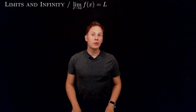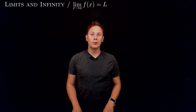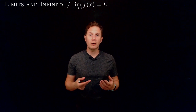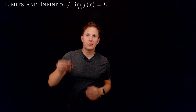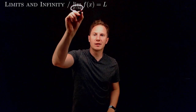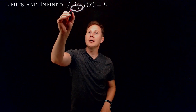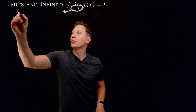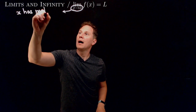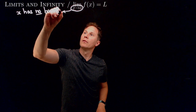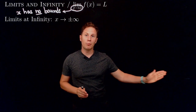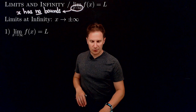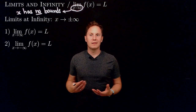Let's consider our limit definition once more and extend it so that it includes the cases when our input numbers x or our output values f(x) increase or decrease without any bounds. When x, rather than approaching a finite number a, increases or decreases exceeding any bounds, we speak of limits at infinity — x approaching positive infinity or negative infinity along the number line. This gives us two cases to distinguish.